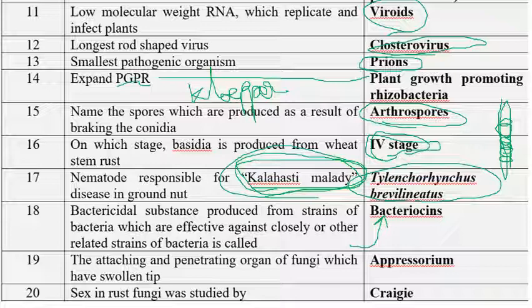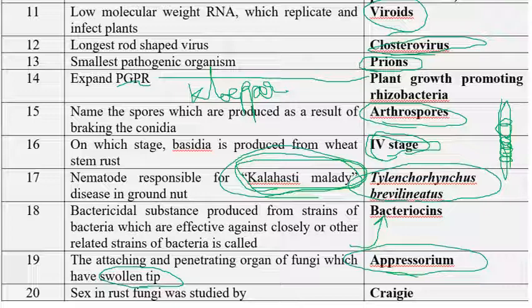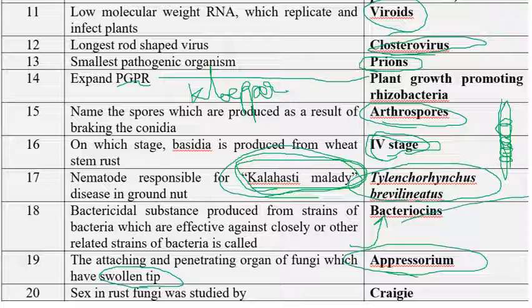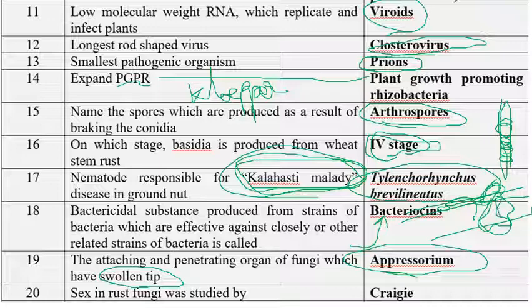The penetrating organ of fungi which has a swollen tip is the appressorium. Appressorium is the attachment organ of fungi, whereas haustoria is the absorbing organ. A spore germinates and produces a large appressorium with a swollen tip that enters the plant cell. Inside the cell, haustoria are produced, which absorb nutrients to nourish the spore.